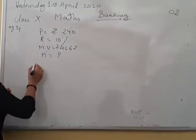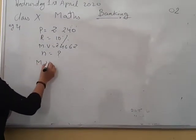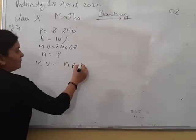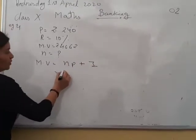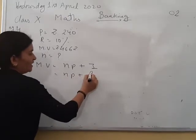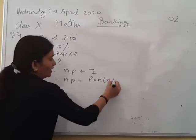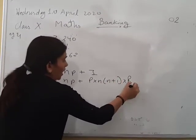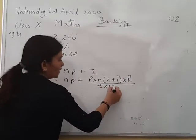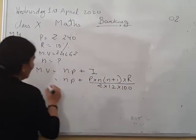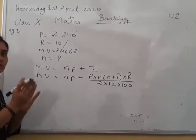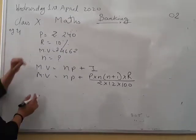Now suppose the principle is given to you, interest is given to you. This is example number 4. Principle is given to you rupees 240 per month and rate of interest is 10%, and at the time of maturity he gets 4662. We will write the formula first. That is maturity value equals to Np plus I.